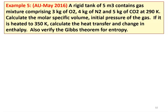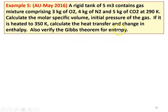Example number 5, from the May 2016 question paper. A rigid tank of 5 cubic meters contains a gas mixture comprising 3 kg of O2, 4 kg of N2, and 5 kg of CO2 at 290 Kelvin. Calculate the molar specific volume and initial pressure. If it is heated to 350 Kelvin, calculate the heat transfer, change in enthalpy, and verify the Gibbs theorem for entropy.